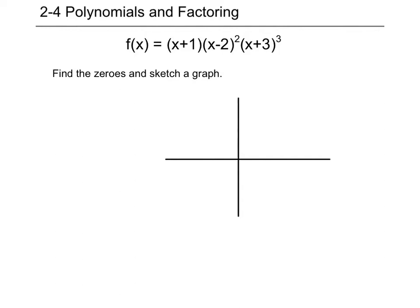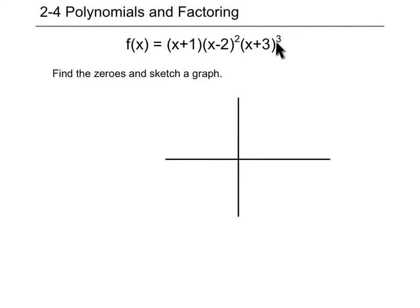The problems you'll do in class will be very similar to these. You can see here that this first function is already factored into one, two, three factors with different multiplicities. X plus one gives a zero of negative one with a multiplicity of one. The second factor is x minus two, so the zero is two with a multiplicity of two — a bounce. The last one is x plus three, zero at negative three, multiplicity of three — that one's a wiggle.